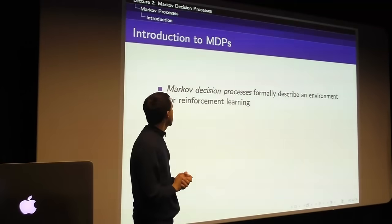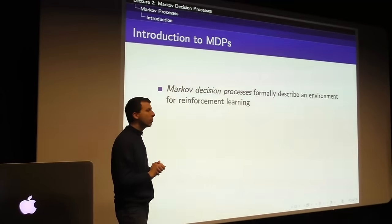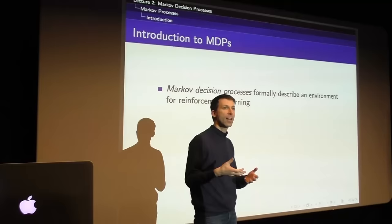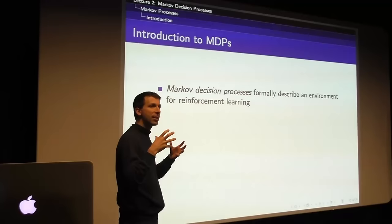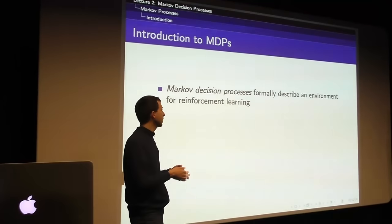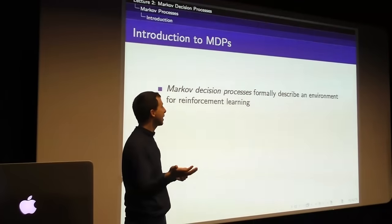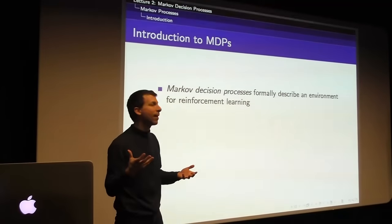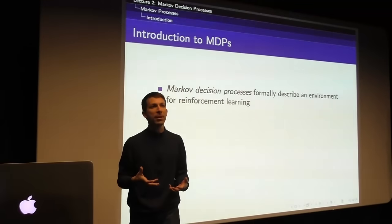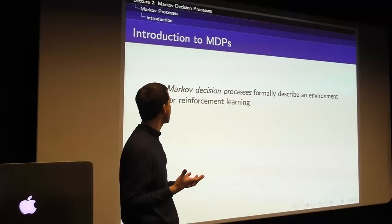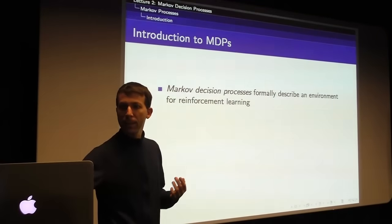We're developing the formalism of the Markov decision process. In the last class we talked about agents and environments — the agent is our algorithm, the brain we're trying to build, interacting with some world. That might be the real world for a robot, a trading environment for a trading agent, or a factory floor. We want a description of that environment so we can apply tools to it and understand what it means to do reinforcement learning. That's going to be the MDP.